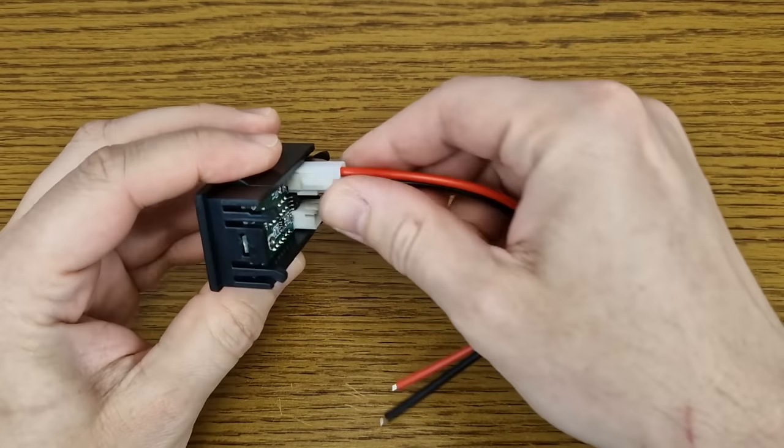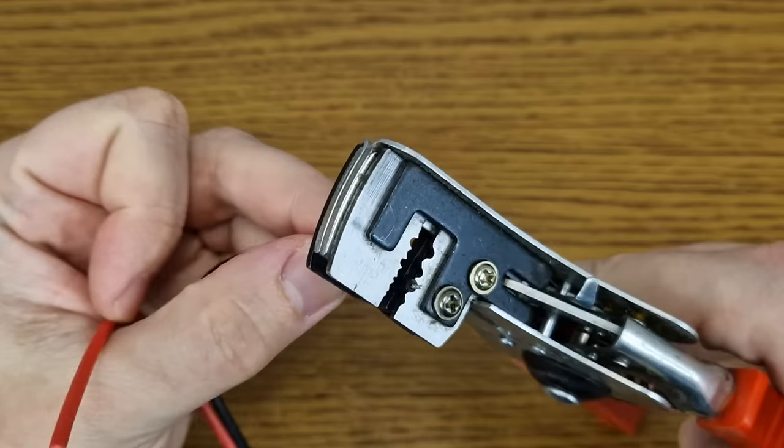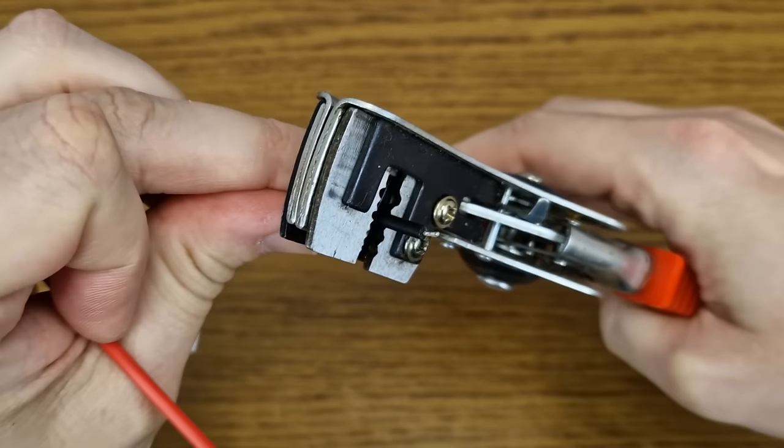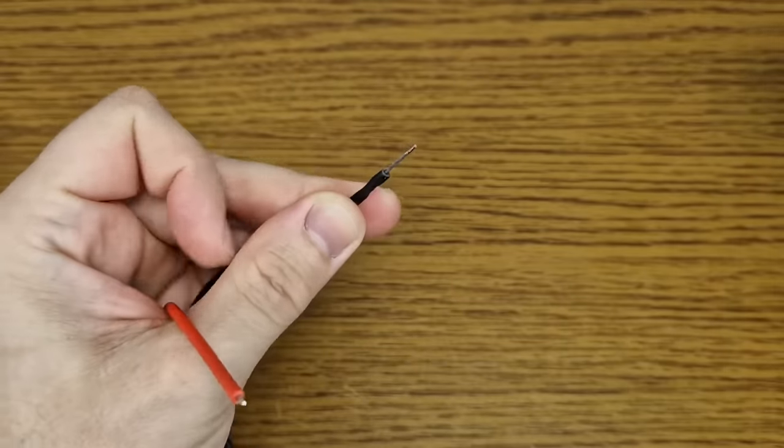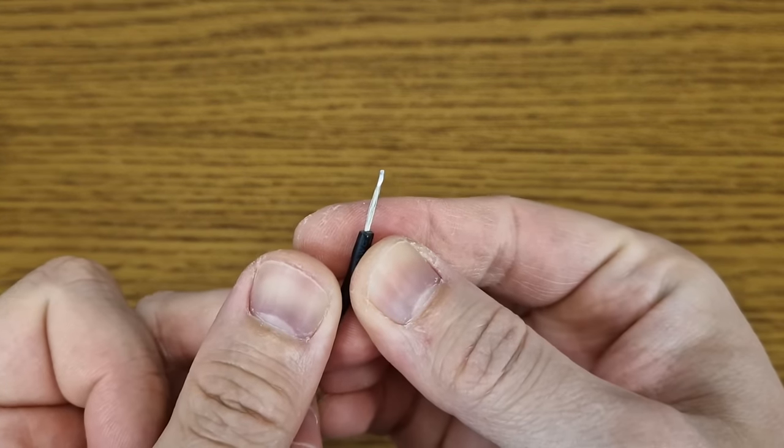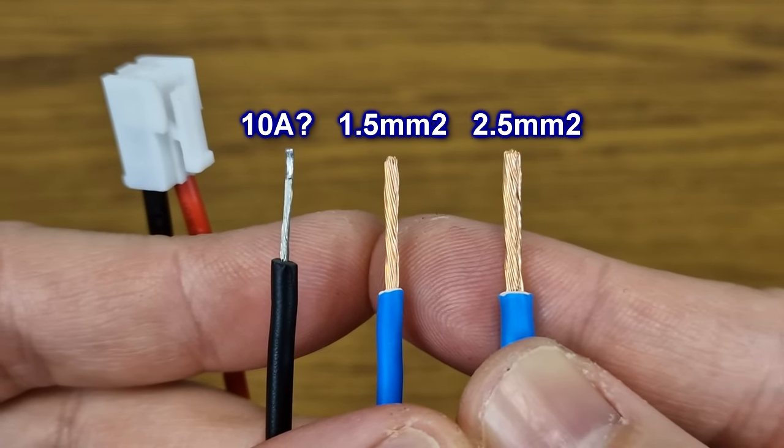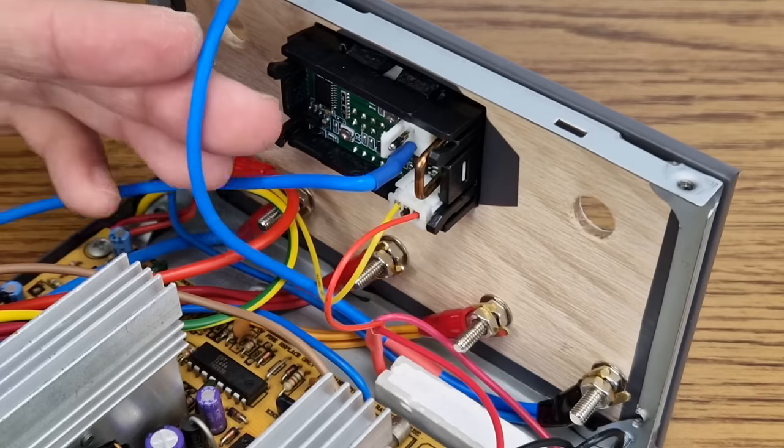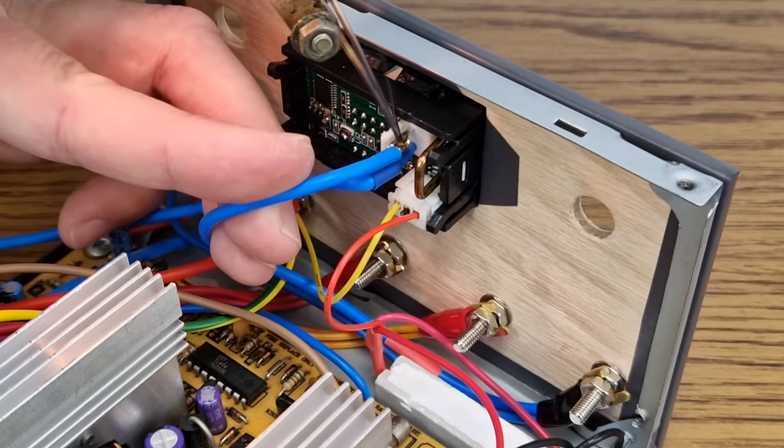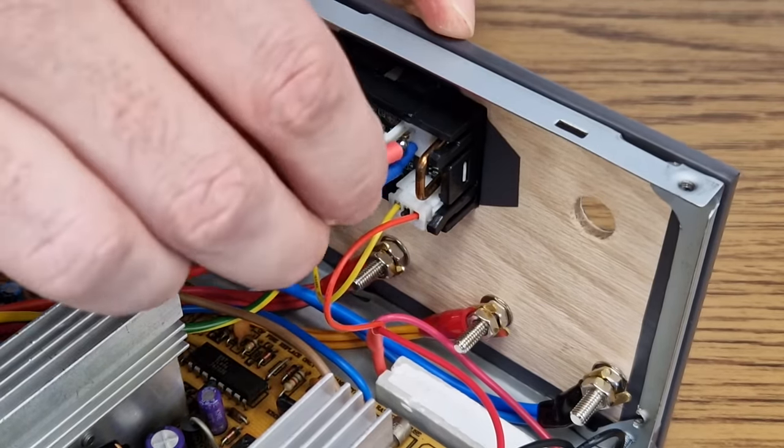These are the ammeter wires, and theoretically, this ammeter can measure up to 10 amps. But let me show you something. Check out how thin this wire is. Is it really able to carry 10 amps without altering the measurements? Look how thin it is compared to the other wires I'm using. So, I will replace it with a thicker one. And for a good contact, I will solder the wires directly to the ammeter pins.